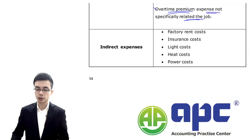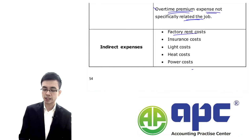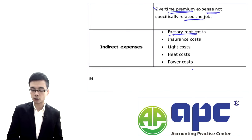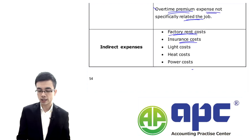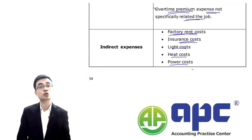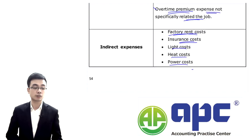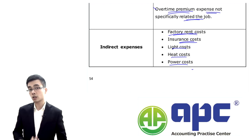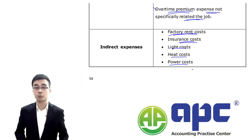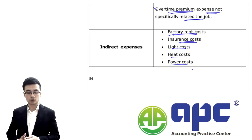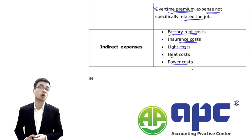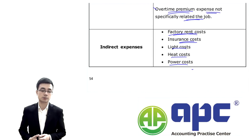Indirect expenses include the rental expense for the factory, insurance costs incurred in the factory, and light, heat, and power costs incurred in the factory. Those are the examples you can refer to again in later studies and later papers.